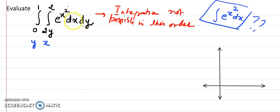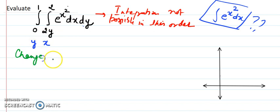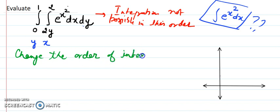But a change of order is not possible simply by swapping the variables and limits — that's not how it works. We have to read the limits from the diagram region. This particular problem is selected to give you one key piece of information: change of order can be done when integration limits are already given. This problem is giving you the function and the motivation. Not every time is change of order required — sometimes the function is simple enough to handle both ways — but the current function makes it necessary to change the order.